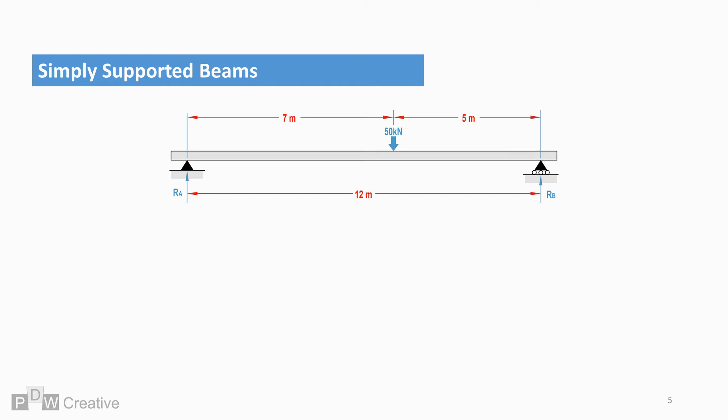To calculate the reactions at both points, we need to know the length between points and the exact location of the load. As we know, the beam is in equilibrium so the sum of RA and RB must be 50 kN.